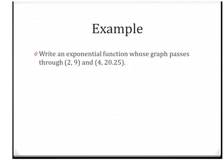Let's do one more example to make sure you've got it. Remembering that our exponential function is y = a·b^x, we're going to write equations for both ordered pairs. This gives us 9 = a·b² and 20.25 = a·b⁴. We need to solve for one of those variables — you might find a easier to solve for since b has an exponent.